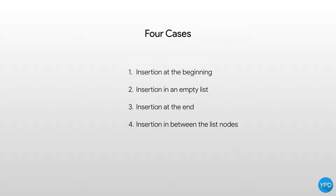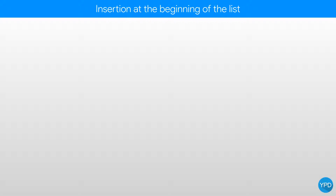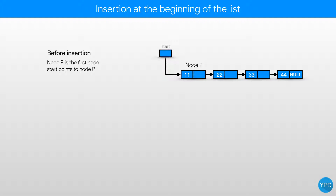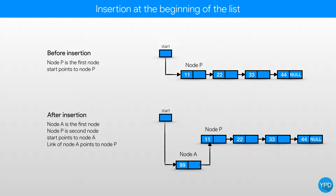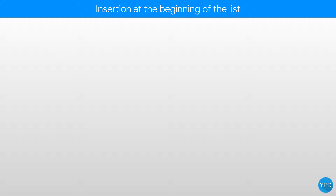Let's start with inserting a node at the beginning of the list. Let's compare before and after insertion in the linked list. Before insertion, node P is the first node and start points to node P. After the insertion, node A is the first node and node P is the second node. Start points to node A, and the link part of node A points to node P. So just by the diagram, I can understand the commands that I have to write: make the link part of node A point to node P, and make start point to node A.